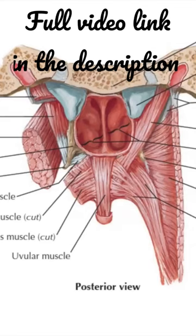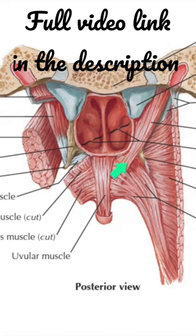The palatine muscles are arranged in five pairs and are named as follows: the tensor veli palatini muscle on either side, and the levator veli palatini muscle.